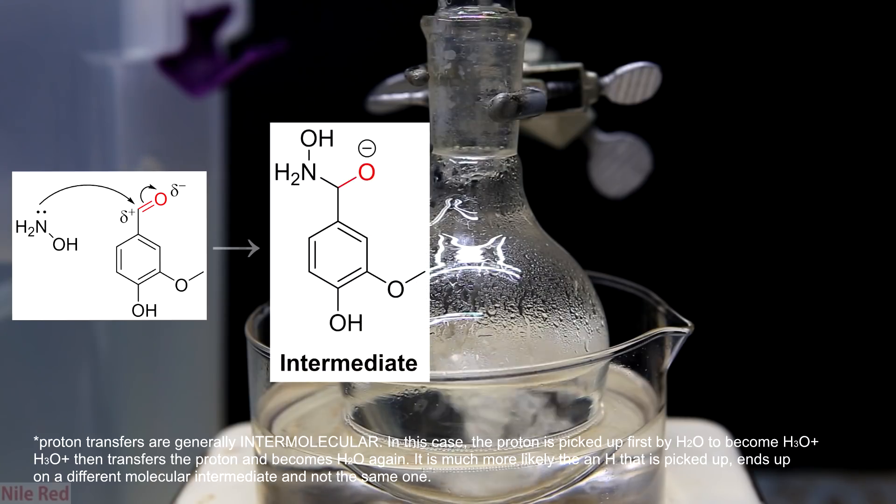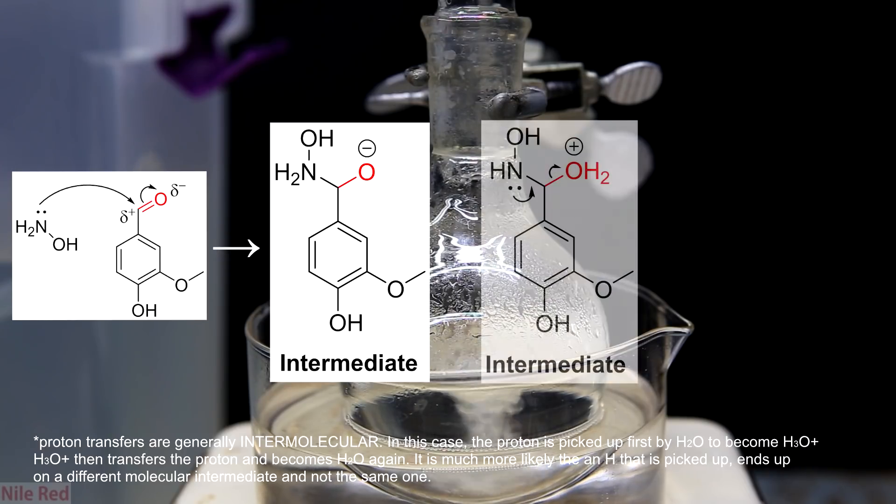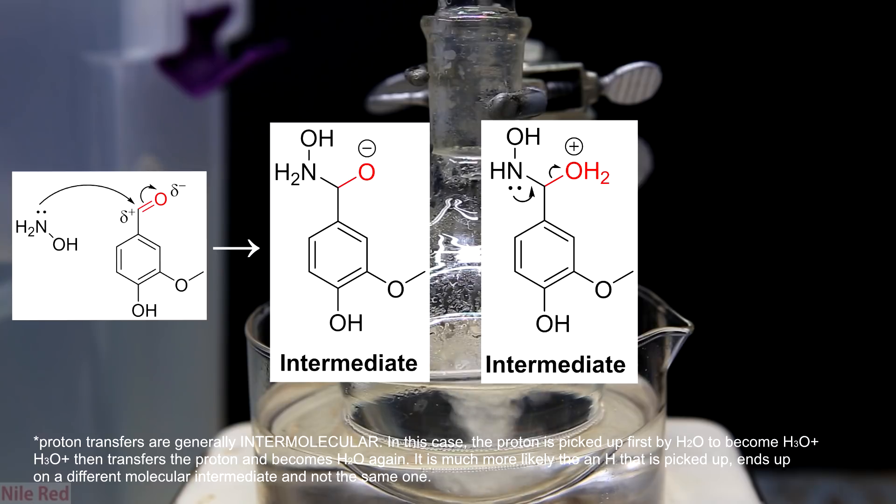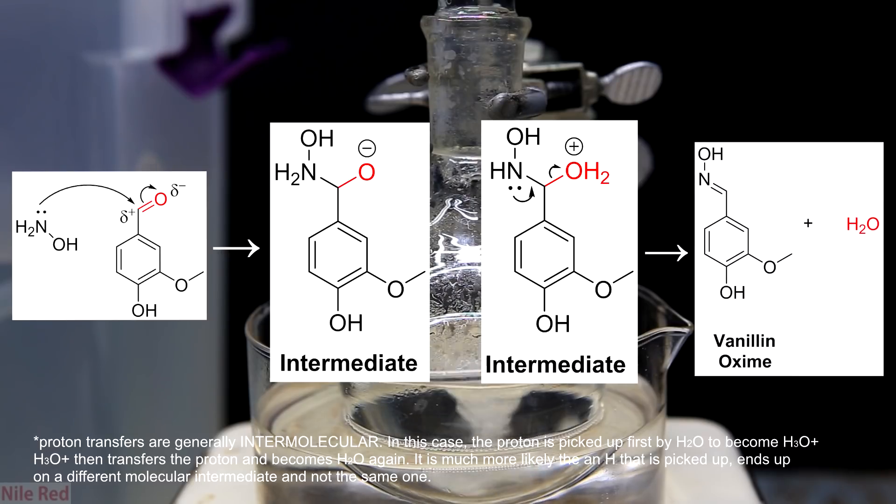This forms an intermediate where one hydrogen from the nitrogen and one from the acid is transferred to the oxygen. The oxygens are not directly transferred from nitrogen or acetic acid and water actually acts as the intermediate. This turns the oxygen into a water molecule and it's pretty stable on its own and really wants to leave. To initiate this a free lone pair of the nitrogen forms a double bond with the carbon and the water is kicked off. The H on the nitrogen is picked up by water to regenerate the acid. This forms our final vanillin oxime product with water as a byproduct.